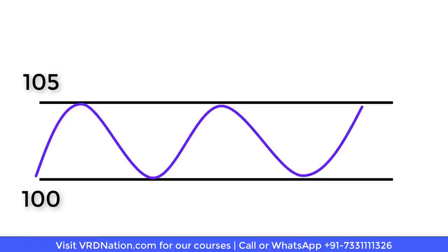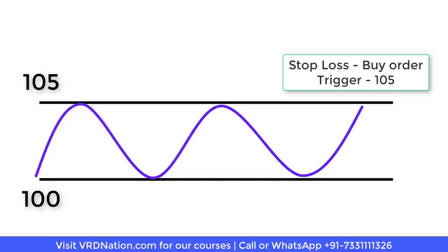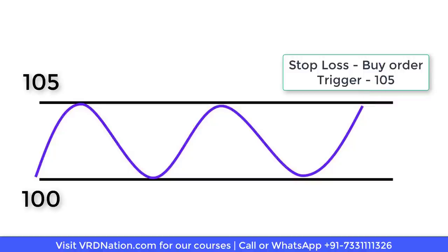This is where stop-loss orders come to your rescue. What you can do is create a stop-loss buy order with a trigger price of 105 rupees. The trigger price is simply the price at which the order gets activated. If the stock is trading below 105 rupees — at 102, 103, or 104 — the order will not get executed. It will just keep waiting. But when the breakout happens and the price goes to 105 rupees, the order will get triggered and executed.